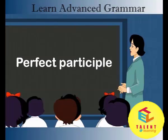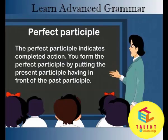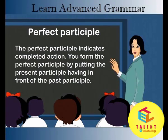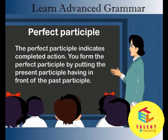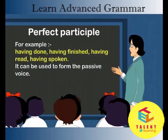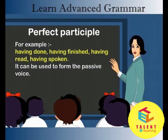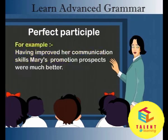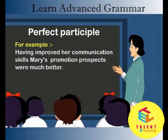Perfect participle. The perfect participle indicates completed action. You form the perfect participle by putting the present participle having in front of the past participle. For example: having done, having finished, having read, having spoken. It can be used to form the passive voice. For example: having improved her communication skills, Mary's promotion prospects were much better.